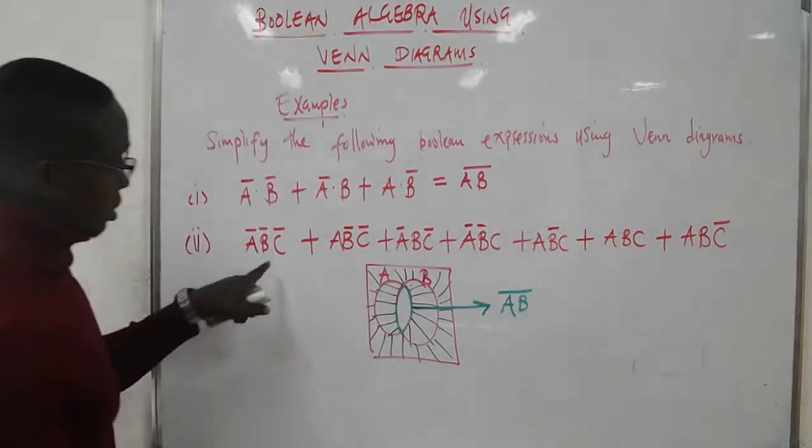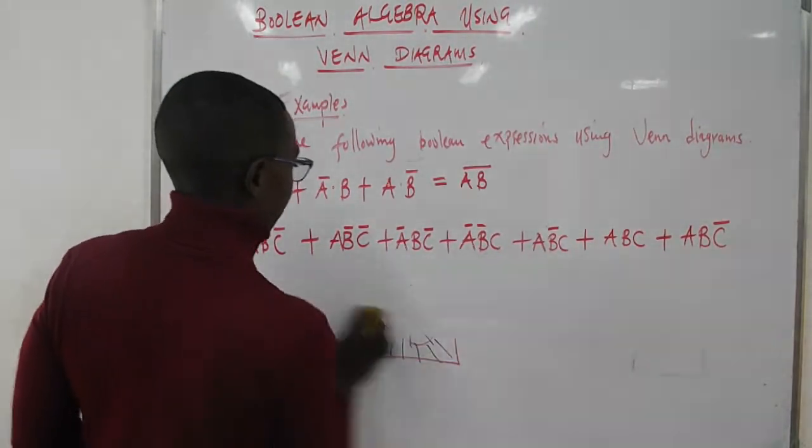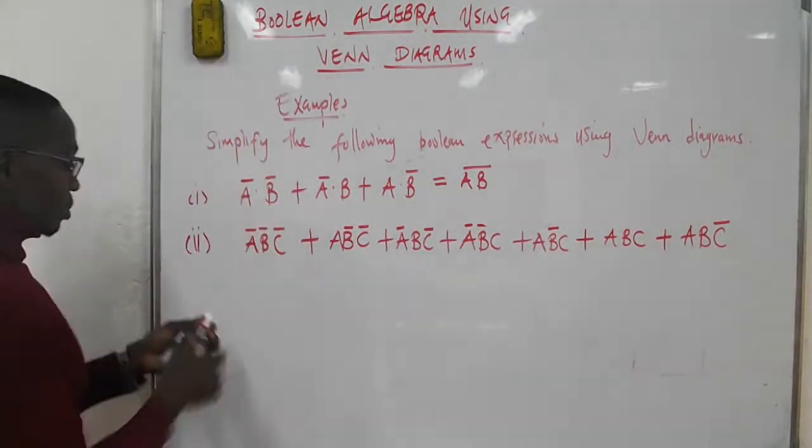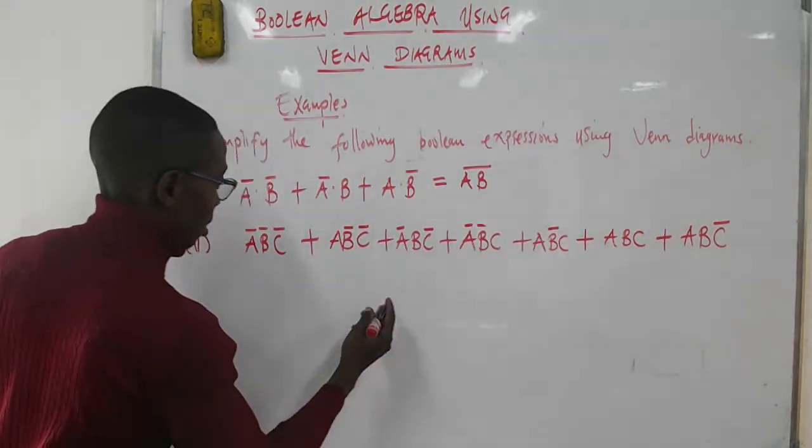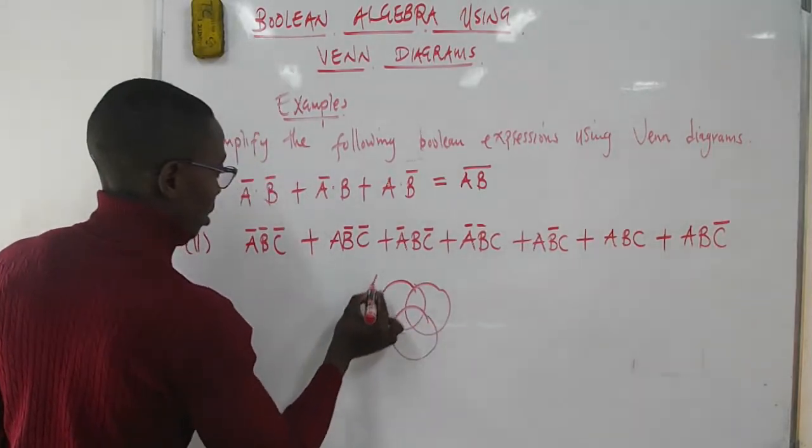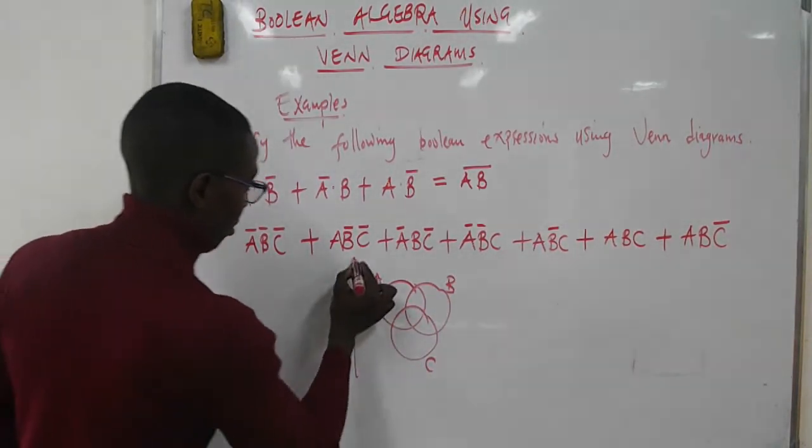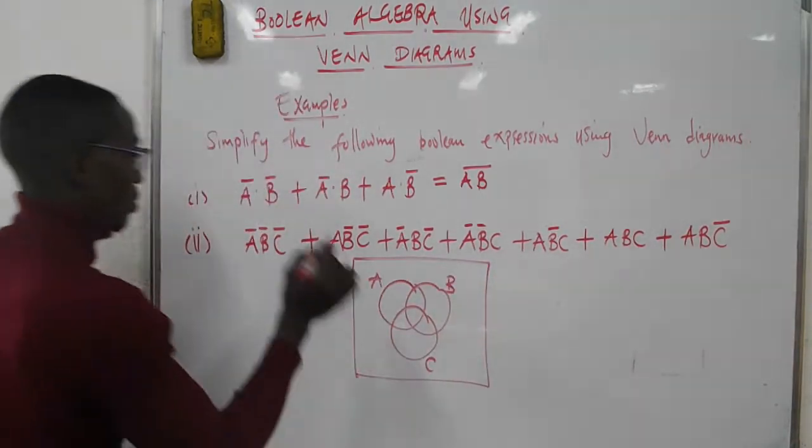Now for the second example, we simplify this expression using Venn diagrams. We draw the three sets: A, B, and C.